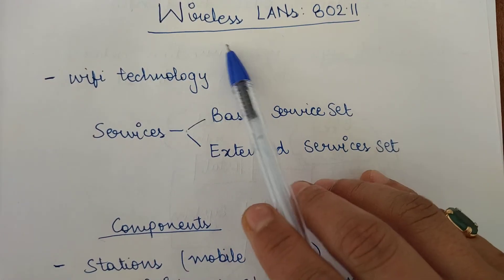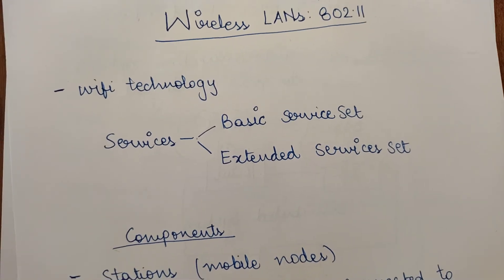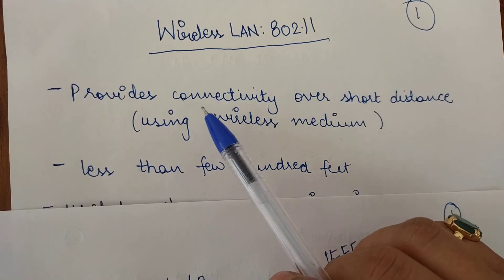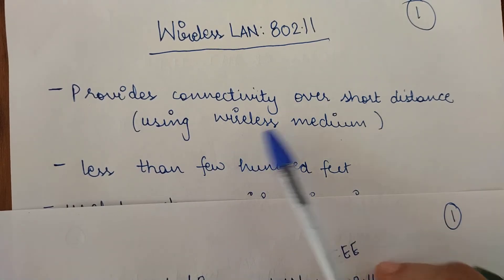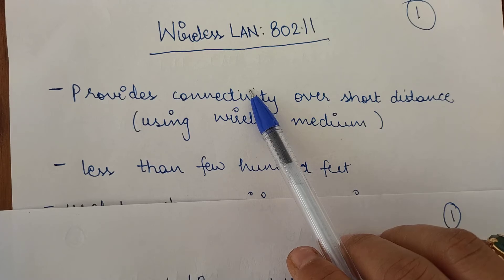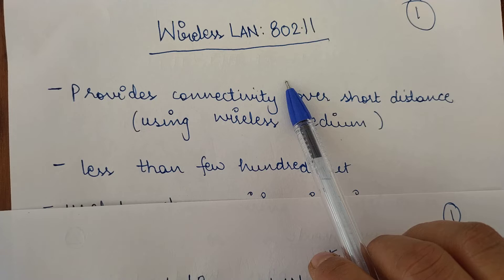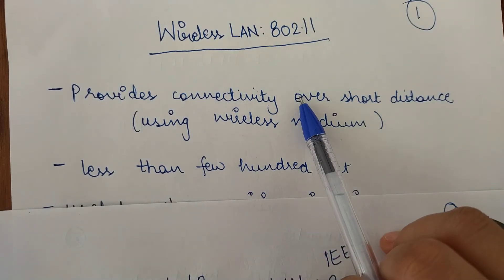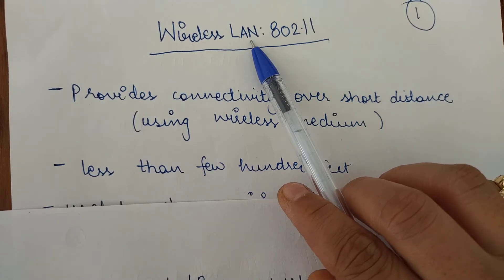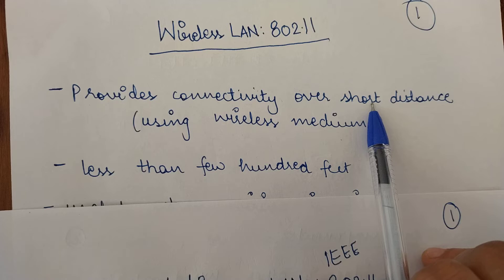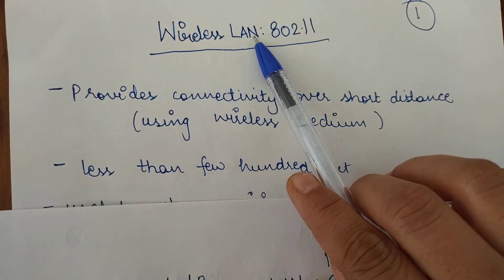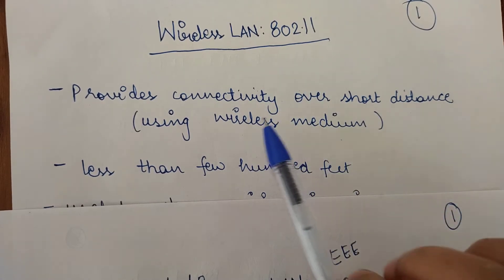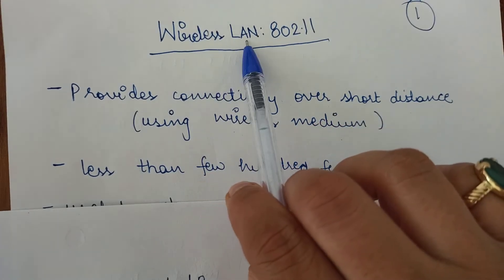The Wi-Fi technology that we use is wireless LANs. Before proceeding, let's have a quick overview of what wireless LAN is doing. It is basically providing connectivity over short distance using a wireless medium. Just like a LAN provides connectivity through a wired medium, a wireless LAN provides connectivity through a wireless medium, using a wireless medium since it is a wireless LAN.